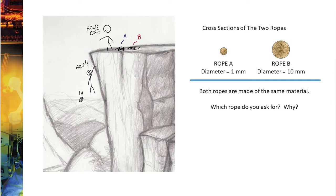So if both ropes are made out of the same exact material, which rope would you ask me to throw you to help save your life? Would you choose Rope A or Rope B? Think about that for just a second. Hopefully that didn't take you too long, but hopefully you picked Rope B — and why would you have picked Rope B? Probably because it's larger. If you picked Rope A, a one millimeter tiny little rope, that might snap and break, and that would not help you — that would cause you to fall down.